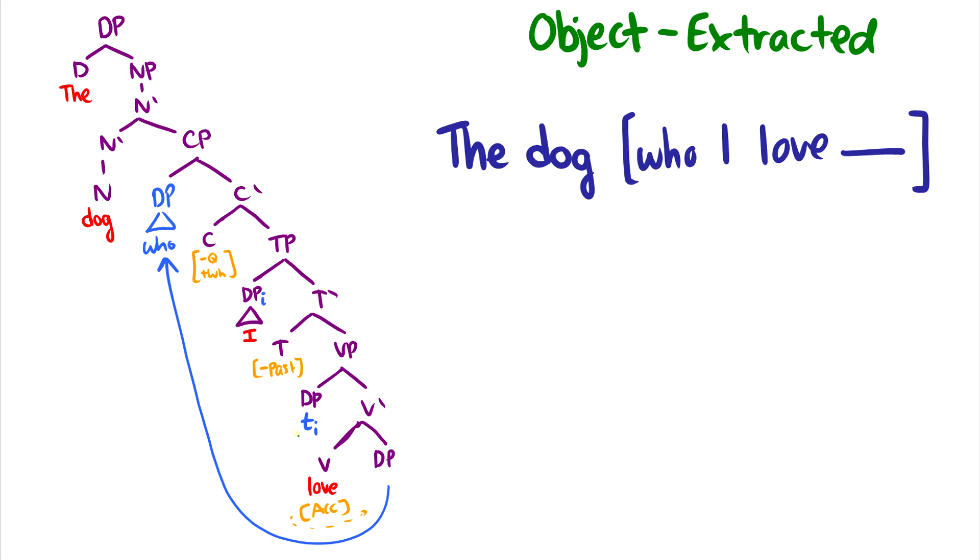But we can just see I is the subject of love. So it just moves from spec VP to spec TP to get case and theta role. And that's all there is to relative clauses. They are pretty straightforward.